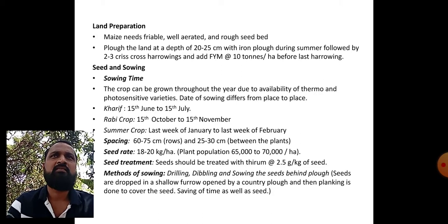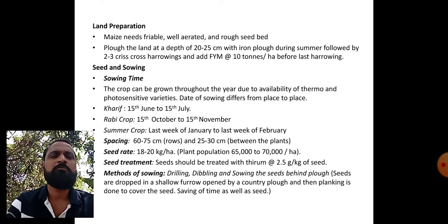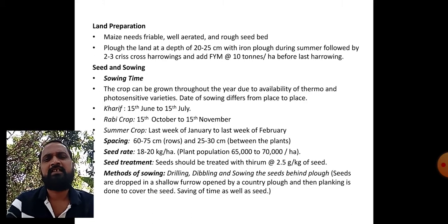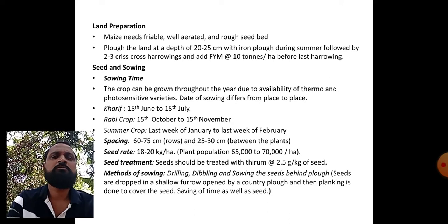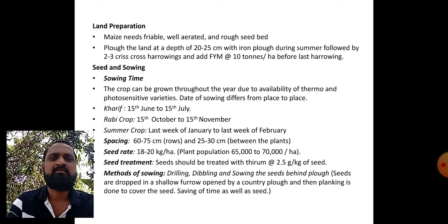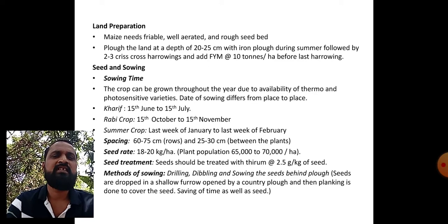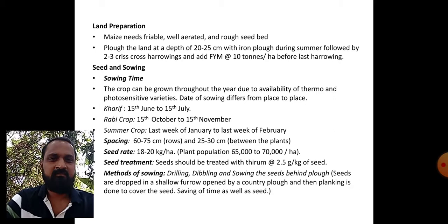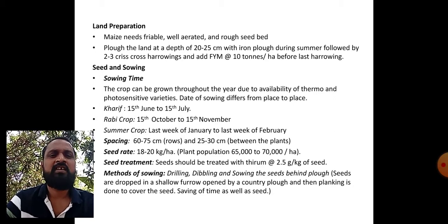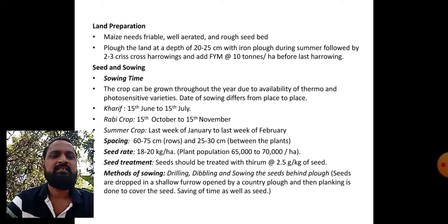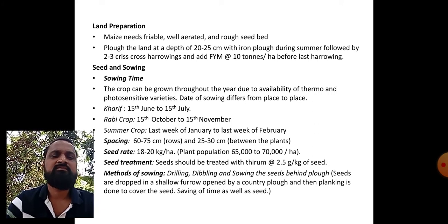Seed and sowing: six to seven points should be covered. First, sowing time: the crop can be sown throughout the year due to availability of thermo and photosensitive varieties, and dates of sowing change place to place. Kharif: 15 June to 15 July. Rabi: October to 15 November is the suitable period. For summer crop: last week of January to last week of February is the best time for sowing.